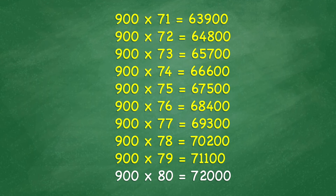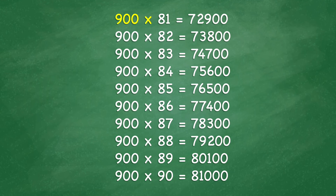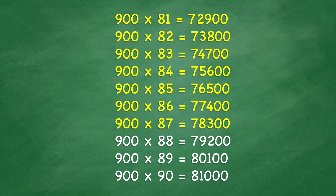900 times 80 equals 72,000. 900 times 81 equals 72,900. 900 times 84 equals 75,600. 900 times 85 equals 76,500. 900 times 86 equals 77,400. 900 times 87 equals 78,300. 900 times 88 equals 79,200. 900 times 89 equals 80,100. 900 times 90 equals 81,000.